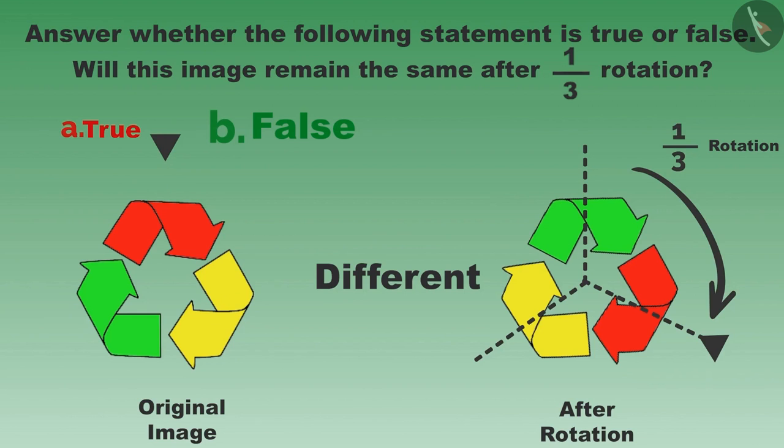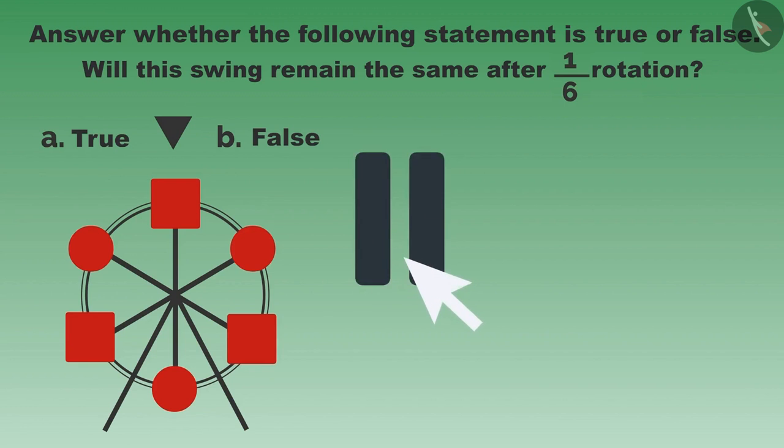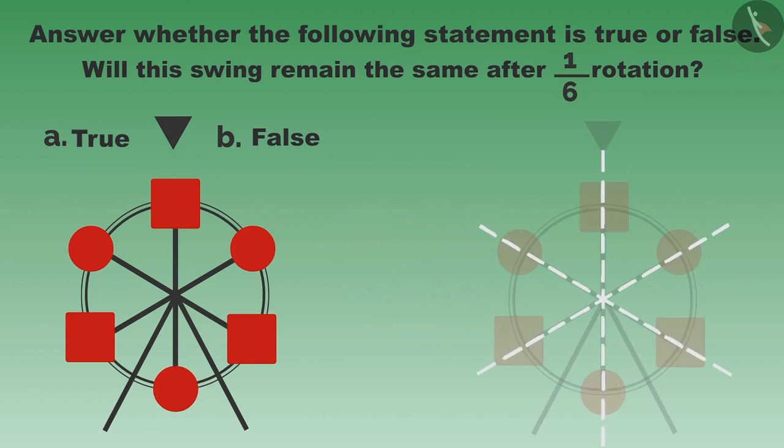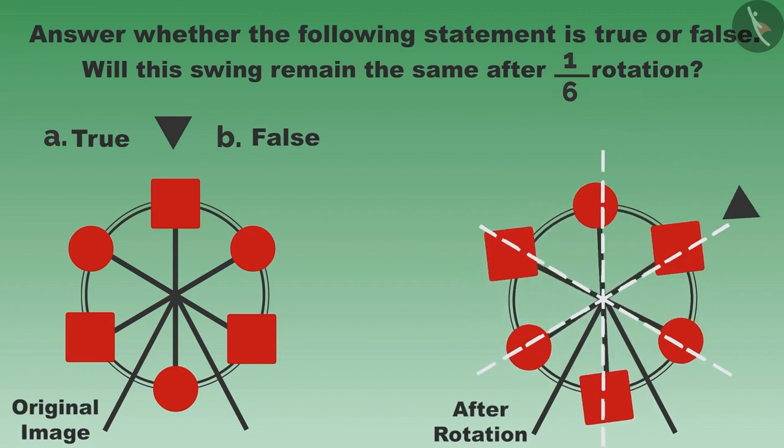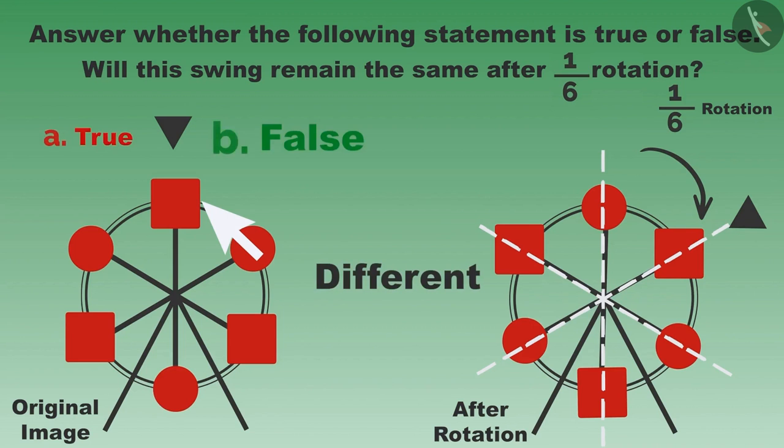Let us look at another example. You must have seen this circular swing. Look at it very carefully. Will it remain the same even after one-sixth rotation? Let us rotate it. You can pause the video and think for a while. This swing does not match with the earlier one after one-sixth rotation. Here, you have to focus on the shape of the cabins also. If the shape of the cabin is not same, then this swing does not match with the earlier one after rotation. Therefore, this statement is false.